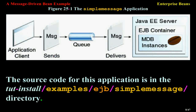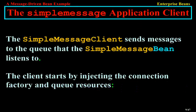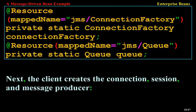The Simple Message Application Client sends messages to the queue that the Simple Message Bean listens to. The client starts by injecting the Connection Factory and queue resources, then creates the connection, session, and message producer.